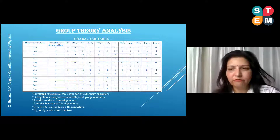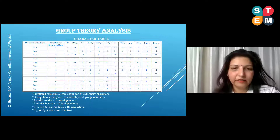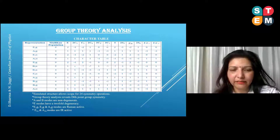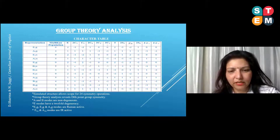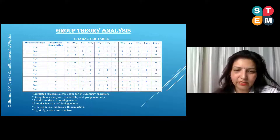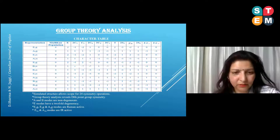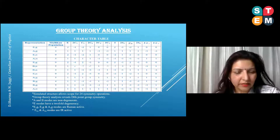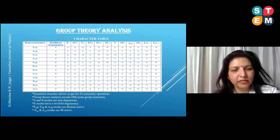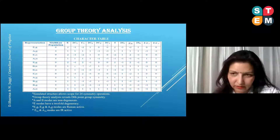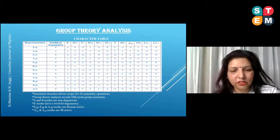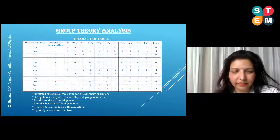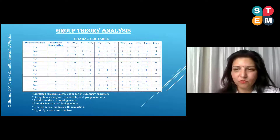All the vibrational modes calculated using the software were subjected to group theory analysis, and you can see the character table here. The main highlights are that the simulated structure allows scope for 24 symmetry operations, and the group theory analysis revealed D6H point group symmetry. In this structure, A and B modes are non-degenerate while E modes have two-fold degeneracy. Theory suggests that E1G, E2G, and A1G modes are Raman active, while E1U and A2U modes are IR active, allowing prediction of IR and Raman spectra.